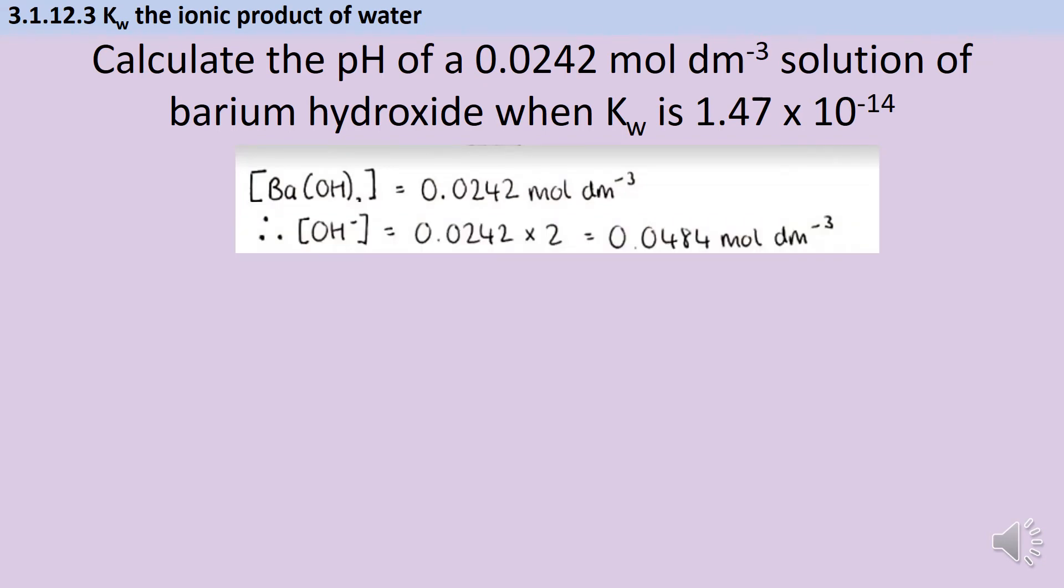Because this is a group 2 hydroxide, there are two hydroxide ions for every one barium hydroxide, so we need to double the concentration, which gives us 0.0484.